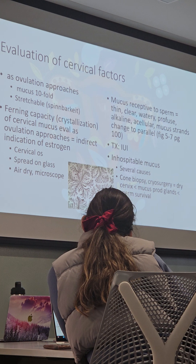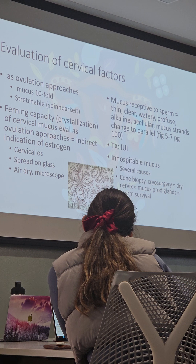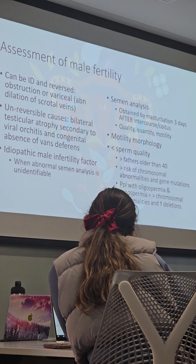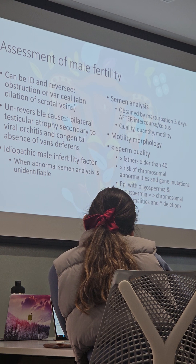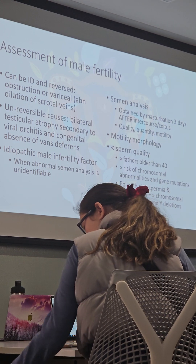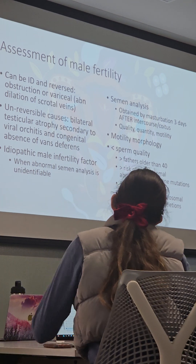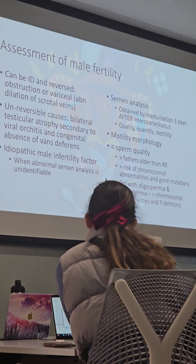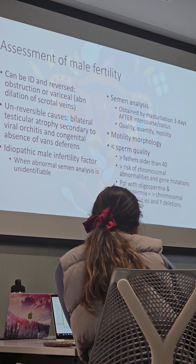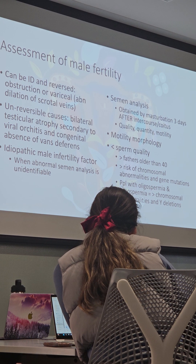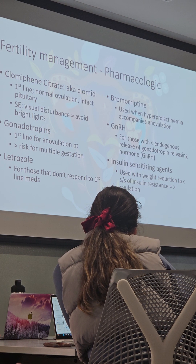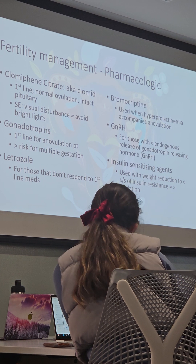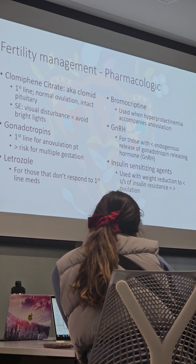Know how to evaluate for hospitable mucus and when somebody is ovulating — teaching around signs of ovulation. Know risks with sperm quality. As a nurse, your biggest role is safety and identifying deviations from normal. Know who's at risk for male fertility issues. Know the first-line medications for fertility, who would be contraindicated to those meds, and maybe what second-line meds you would use.